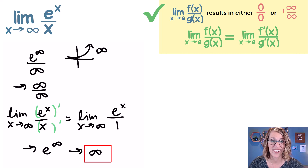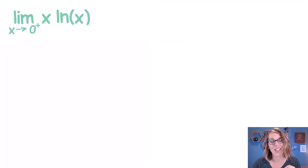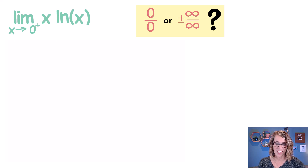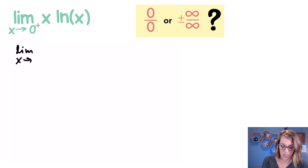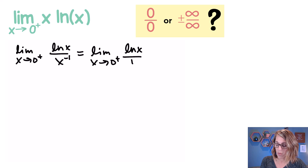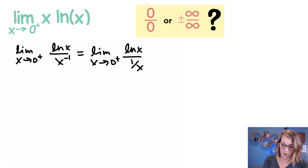Here comes our next one. In this next example we've got a product, but we really need a quotient for the indeterminate form. So in order to check whether it satisfies one of those forms, I need to rewrite this as a fraction. I'm going to leave the natural log in the numerator and put x in the denominator — or equivalently, write the limit as the natural log in the numerator over 1 over x in the denominator.